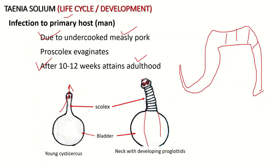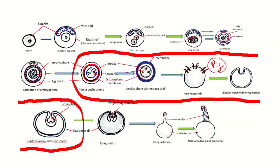In summary, the life cycle stages are: zygote formation, capsule formation, cleavage producing megameres and embryonic cells, then morula stage, embryophore formation, hexacanth or oncosphere formation. The hexacanth enters the blood of the pig, then invagination forms the proscolex, followed by evagination and adult formation. Stages from young oncosphere to bladder worm occur in the pig; the remaining stages occur in the human being.